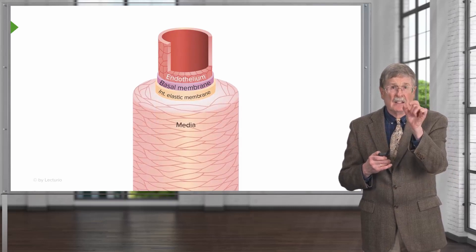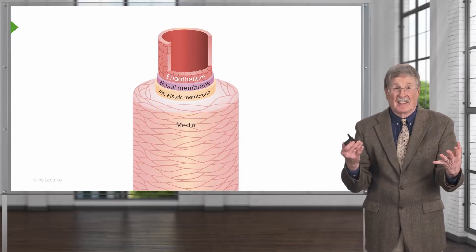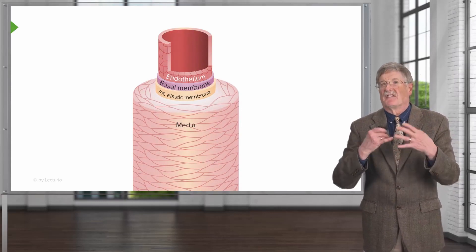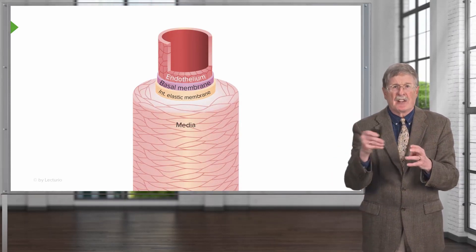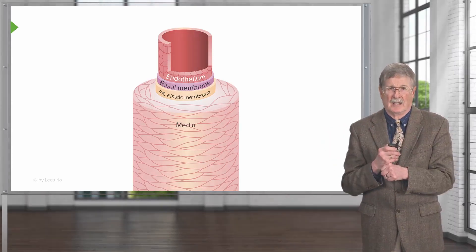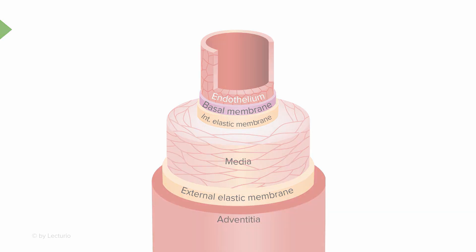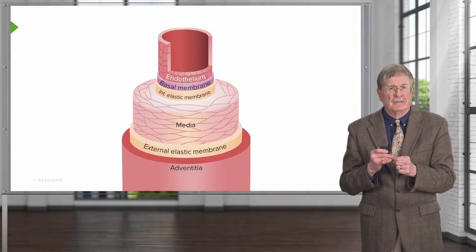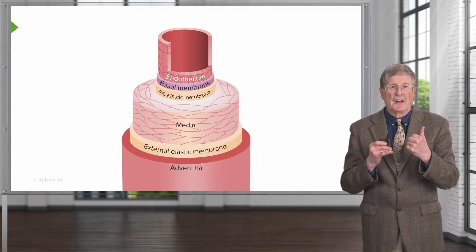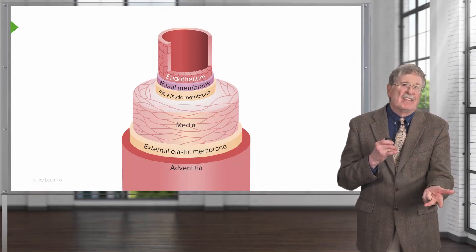Demarcating the arterial intima from the next layer is the internal elastic membrane, or internal elastic lamina, which has elastic structure allowing it to expand, contract, and recoil. That demarcates the intima from the media. The media is the middle layer, composed of lots of smooth muscle cells arranged in a circumferential organization. Demarcating the media from the most external layer is the external elastic lamina, or external elastic membrane. Outside of that is the adventitia, which is loose connective tissue containing nerve fibers, connective tissue, and vasovasorum vessels.